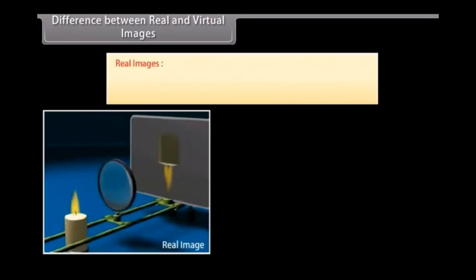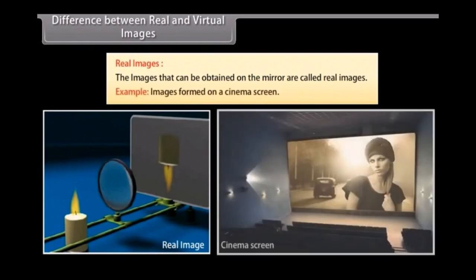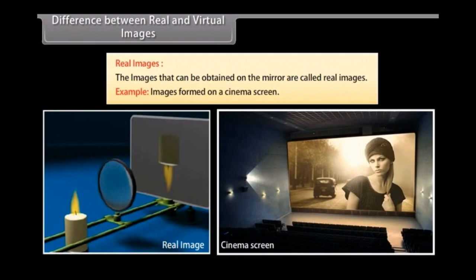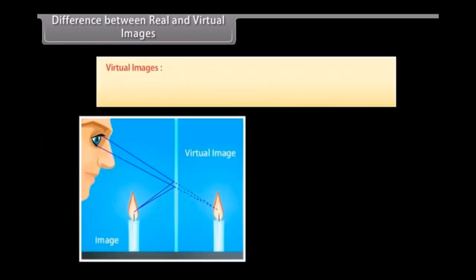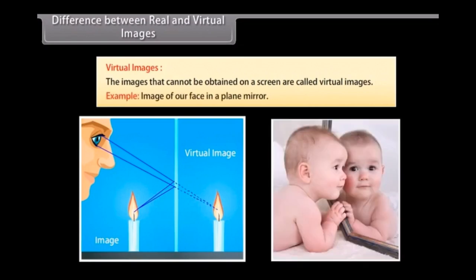Difference between real and virtual images. Real images are images that can be obtained on a screen. Example: images formed on a cinema screen. It is formed by a concave mirror. Virtual images are images that cannot be obtained on a screen. Example: image of our face in a plane mirror. It is formed by convex lens.